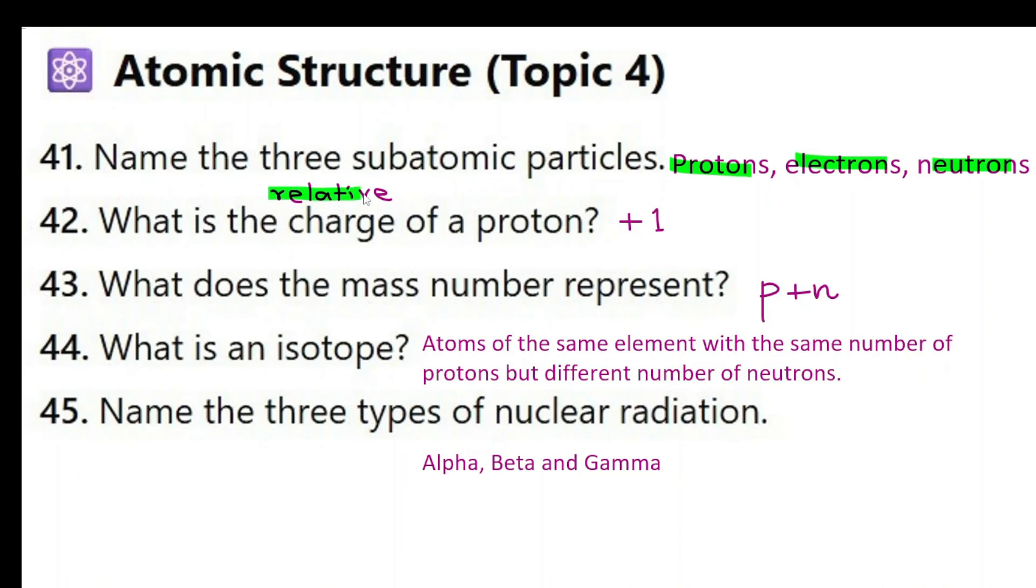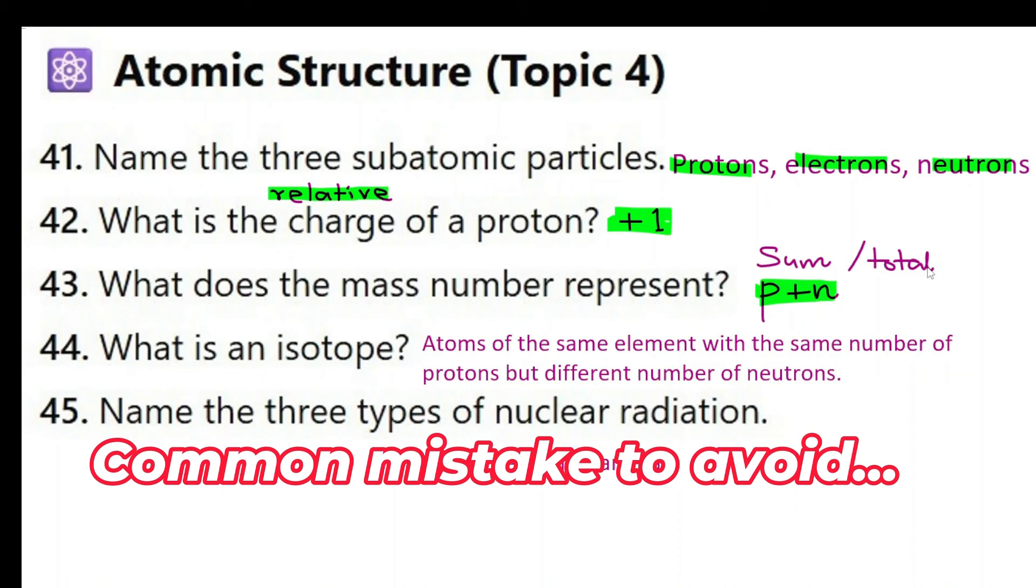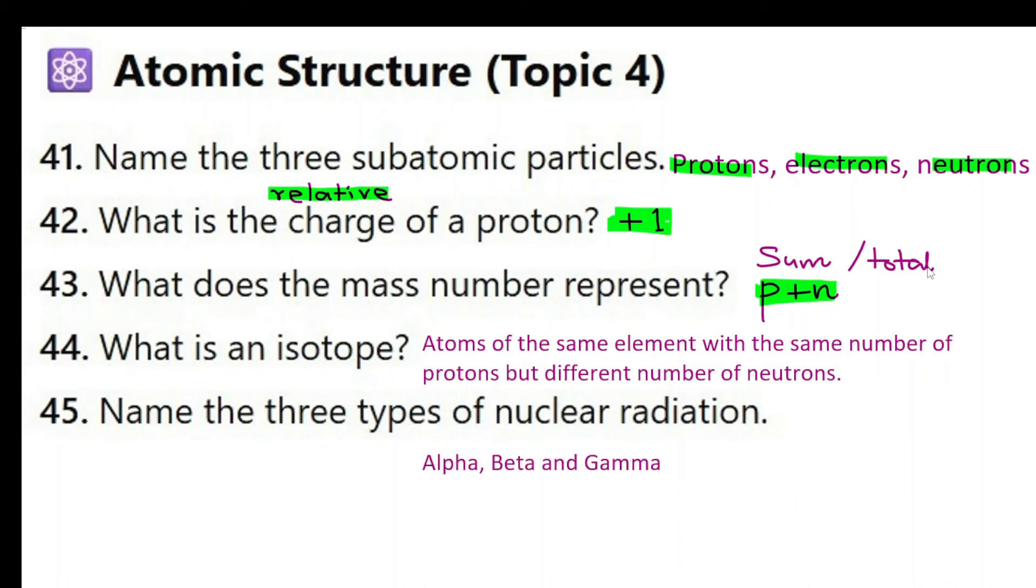What is the charge of a proton? This should really be relative charge. So the relative charge is positive one. What does the mass number represent? It is the sum of protons and neutrons. Now you need to use the word sum or the total of protons and neutrons. I have seen a common mistake when I was marking papers. I have seen students say the number of protons or neutrons and that is wrong. Why? When you say and, you have to add. So the number of protons or neutrons is completely different from number of protons and neutrons added together. Best way would be the sum of protons and neutrons. So for example, if you think about carbon 6-12, this is the number of protons here. This is the number of protons and neutrons added.